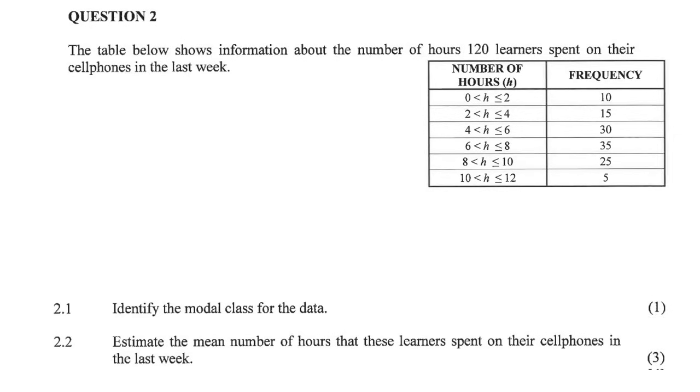So let's just try to explain how this table works. So in the last week, there are 10 people, because frequency says how many, so there are 10 people who spent between 0 and 2 hours on their cell phone for the whole week.